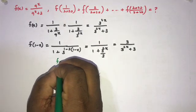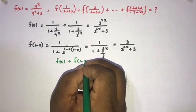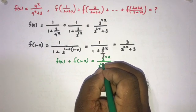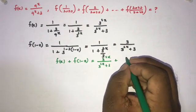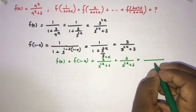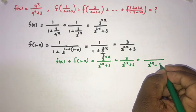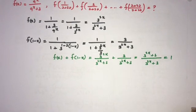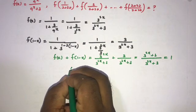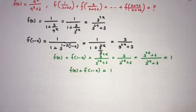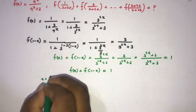Now taking the sum f(x) + f(1 - x), we get 3^(2x) / (3^(2x) + 3) + 3 / (3^(2x) + 3) = (3^(2x) + 3) / (3^(2x) + 3) = 1. So f(x) + f(1 - x) = 1.